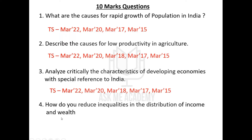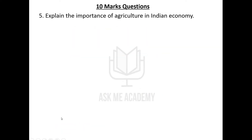The next question is: How do you reduce inequalities in the distribution of income and wealth? This has been asked three times. Then: Explain the importance of agriculture in the Indian economy — asked one time. I am not going to read out questions asked once or twice; I will just scroll through them. You can refer to and note them down.